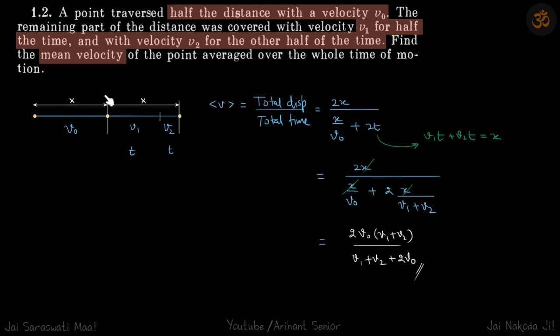Let the distance be x, so each half distance is x. The first half it covers with a velocity v0. The other half x, it covers for half the time with velocity v1 and the other half with velocity v2.